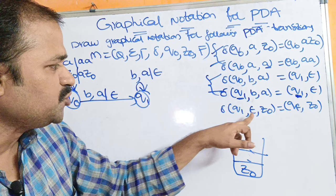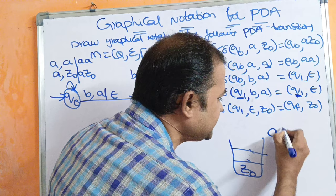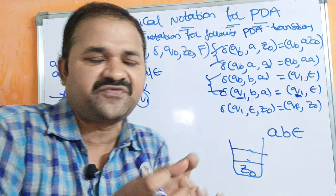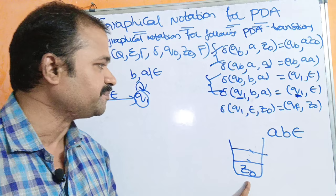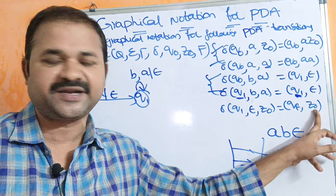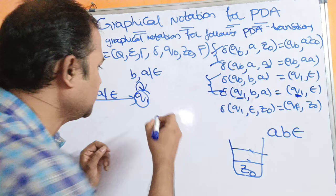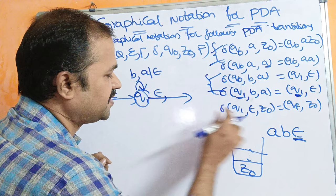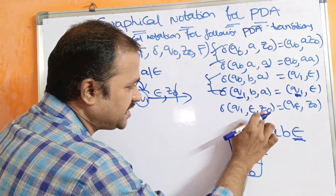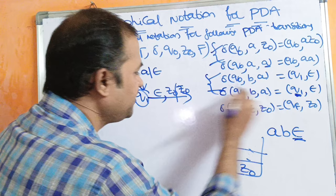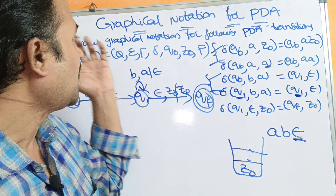The last transition: if the current state is Q1 and the input symbol is epsilon — meaning we have reached the end of the string — and Z0 indicates the stack is empty, then we need to move to the QF state with no replacement needed. We keep Z0 as it is, so we write Z0 replaced by Z0. Thus from Q1, with input epsilon and stack top Z0, Z0 is replaced by Z0, we reach the final state QF. In this way we can draw the graphical notation for the PDA, which is just like a transition diagram.